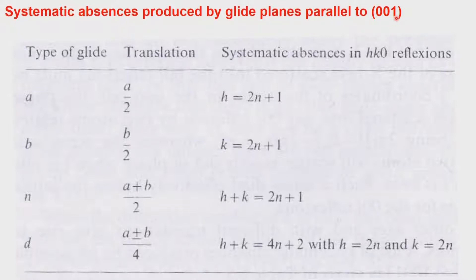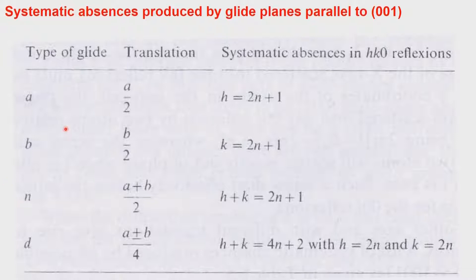We can have C glides parallel to the other two planes, 010 and 100. The 001 plane is perpendicular to the z direction, so a C glide is not allowed there because the translation must be half along that direction. We have therefore the A glide and the B glide. We can also invoke the N glide, which is (a+b)/2, giving the systematic absence h+k = 2n+1. But all these systematic absences occur only in projection reflections — in this case, hk0.